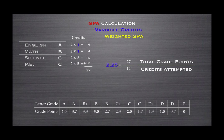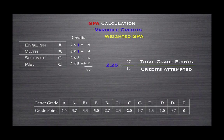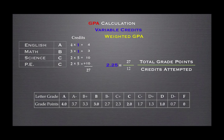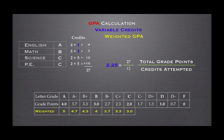An advanced placement course gains an extra grade point only if the student earns a C or better. Looking at the chart, earning an A in an AP course would give the student 5 grade points, earning a B gives 4, and earning a C gives 3. Note that any grade below a C would not yield an extra point.